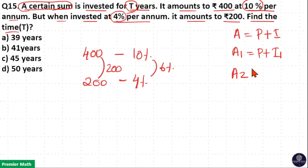Now, A2 is Rs. 200, which is equal to the same principal at the same years but at a different rate, that is at 4% rate. So this is I2 here.